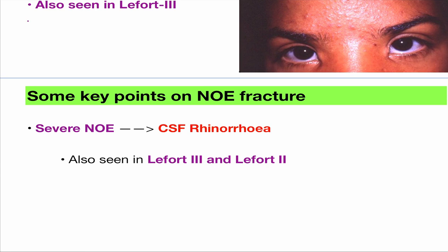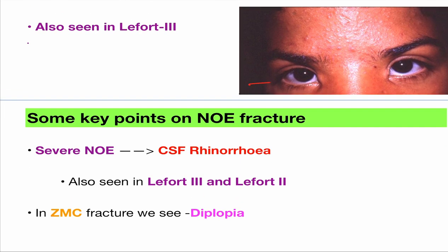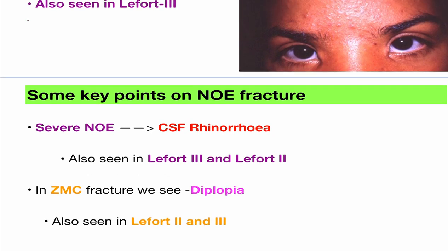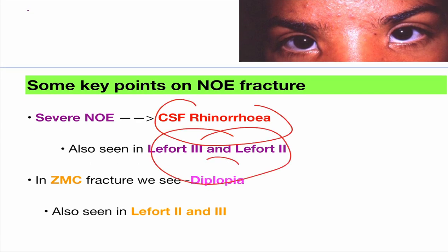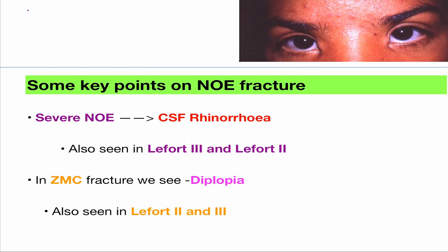Where do you confuse with ZMC? Do you see telecanthus or CSF rhinorrhea in ZMC? No. In ZMC, the feature you see is diplopia — double vision — because ZMC fracture is much more affecting the zygomatico-maxillary region, affecting the muscles and nerves rather than ligaments. Diplopia is also seen in LeFort II and III. So remember: CSF rhinorrhea goes with LeFort II and III, diplopia with LeFort II and III — but what makes the actual difference is CSF rhinorrhea is seen in NOE, and diplopia is seen in ZMC. Never forget that difference.